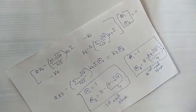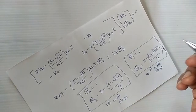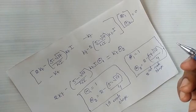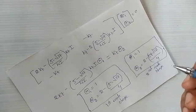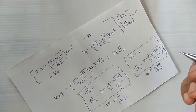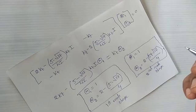This is how you find the eigenvalues and eigenvectors — that is, the natural frequencies and the amplitudes — for the two degrees of freedom torsional vibration system. Thank you.